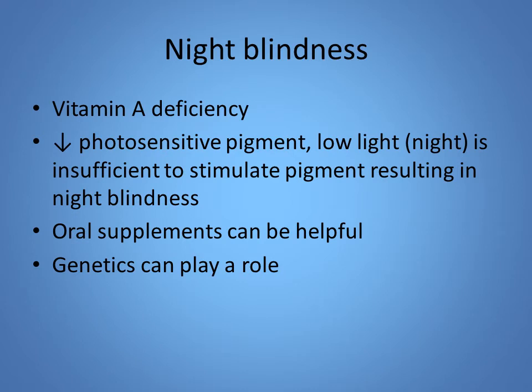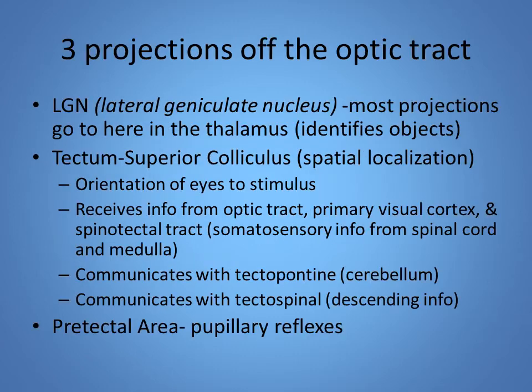Night blindness occurs when someone has a vitamin A deficiency and has difficulty seeing in low light because they don't have enough photosensitive pigment. This can be somewhat reversed with oral supplements and can also have a genetic background. When the optic nerve exits the eyeball, it is called the optic nerve up to the optic chiasm. After the chiasm, it is called the optic tract, which then goes to the lateral geniculate nucleus (LGN) of the thalamus.